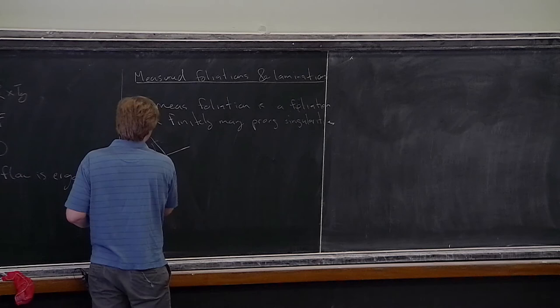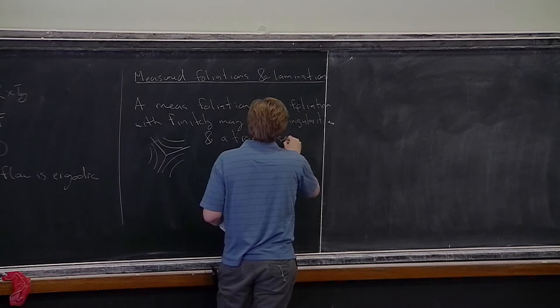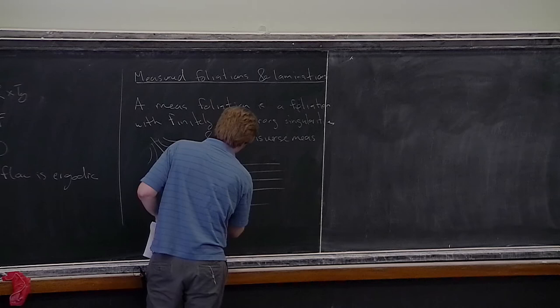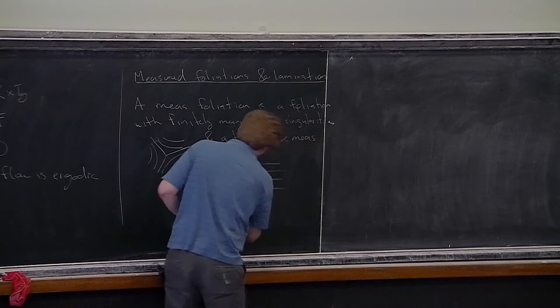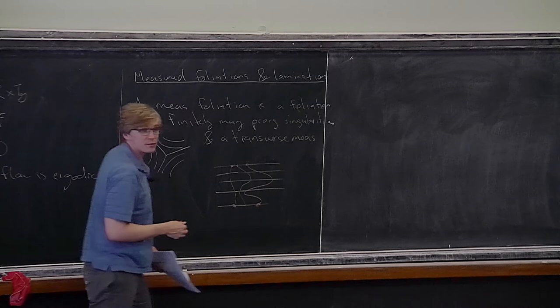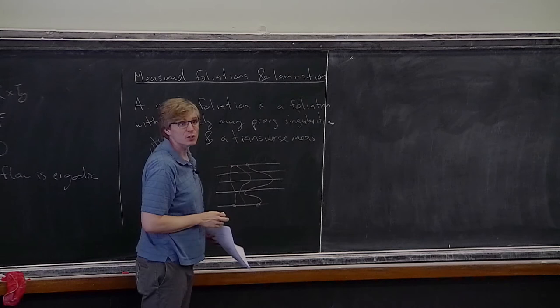A measured foliation is a foliation with finitely many prong singularities. A transverse measure allows you to assign a weight or measure to any transverse arc, with the property that the number is invariant under isotopies of the arc through transverse arcs where the endpoints stay on the same leaves. A canonical example is the horizontal foliation of a quadratic differential.